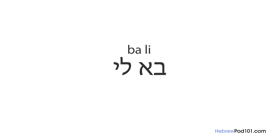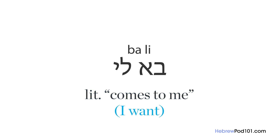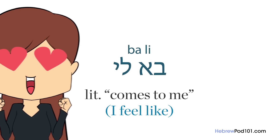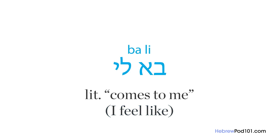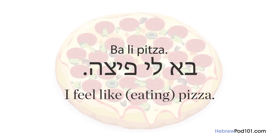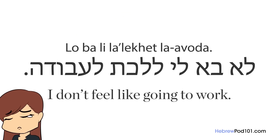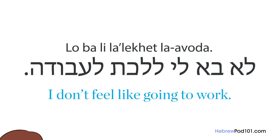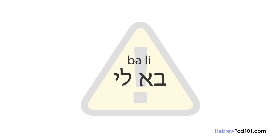Our last idiom represents a life philosophy: 'bali,' which literally means 'comes to me,' but means something like 'I want' with a whimsical edge — a lot like 'I feel like.' It was considered a children's idiom but quickly became common among people of all ages. You can use it with nouns: 'bali pizza' — I feel like eating pizza, or with verbs: 'lo bali l'alecht l'avoda' — I don't feel like going to work. Note: this is a slightly cheeky expression, so don't use it in formal situations — it can come off as rude.